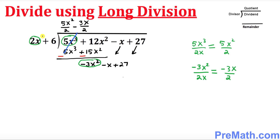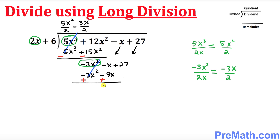Multiply negative 3x over 2 with both terms of the divisor. Then change the sign: this negative becomes positive and this negative becomes positive, so those terms are gone. What we end up with is 8x.